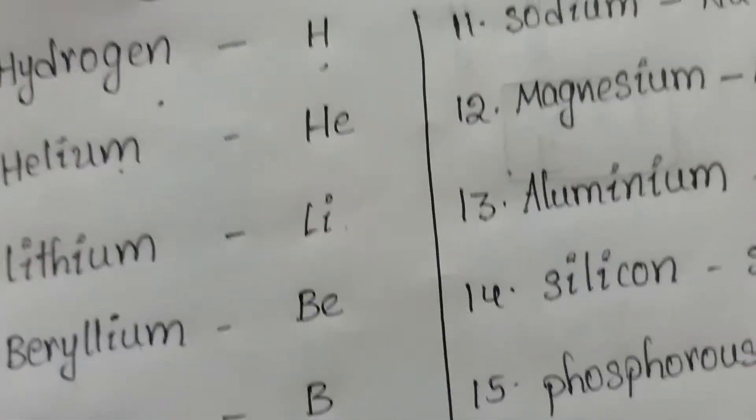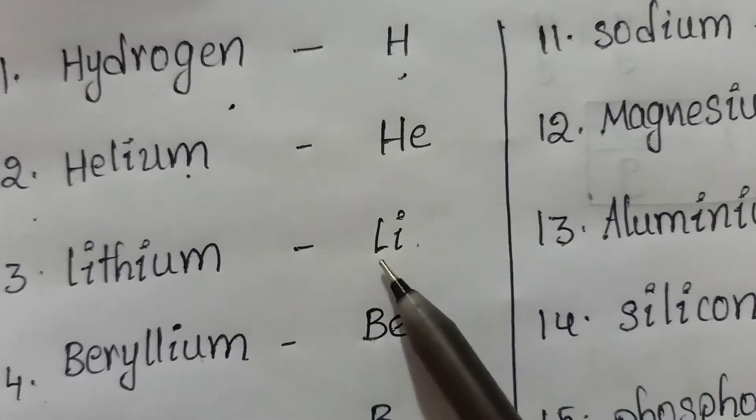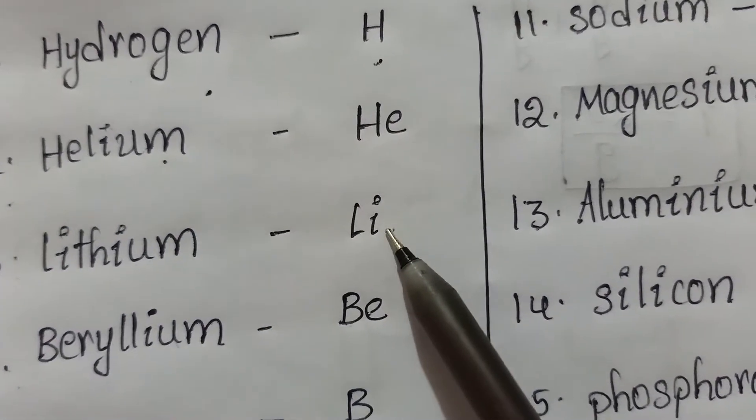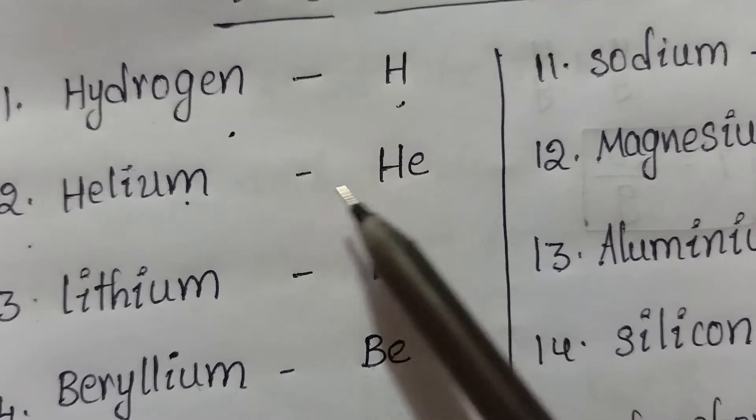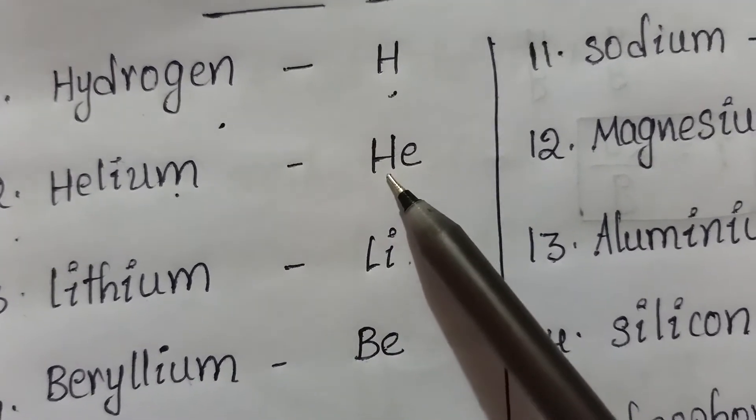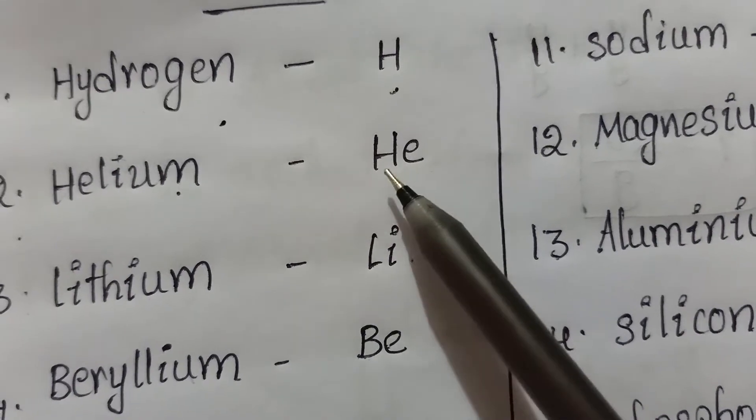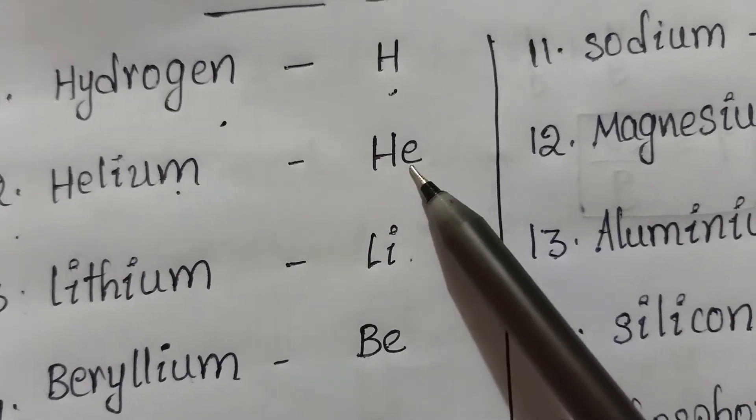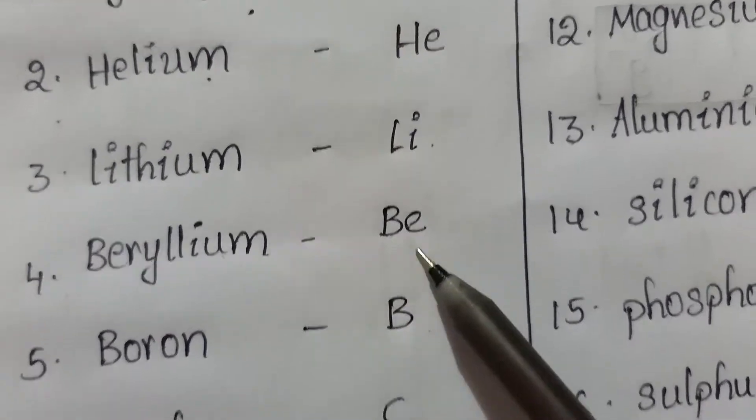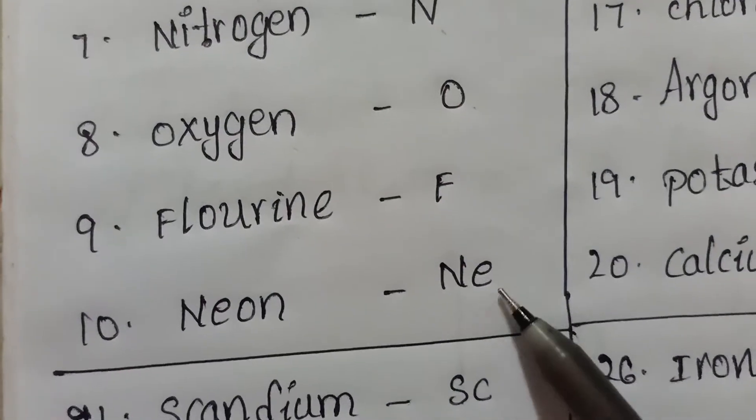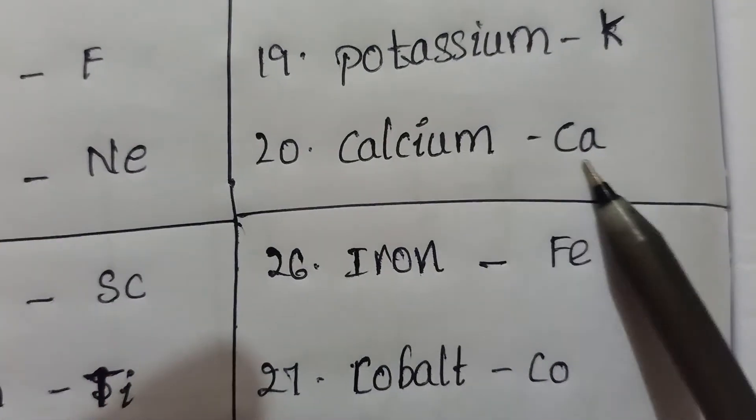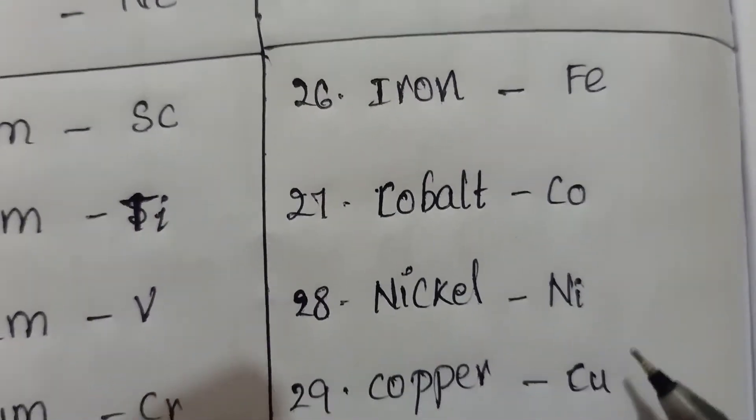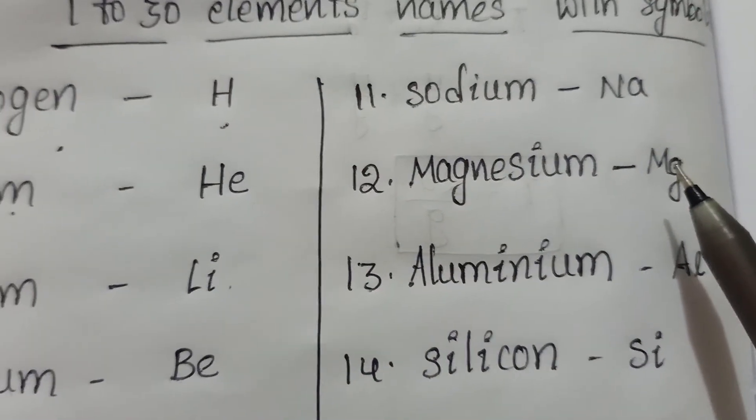See that when the symbol has two letters, the first letter will be capital and the second letter will be small. Everyone please see that carefully when you are writing any symbol. First is the capital letter, if it has two letters, first one is capital and the second one will be the small letter.